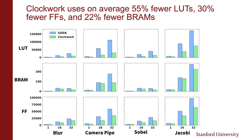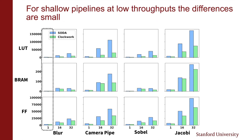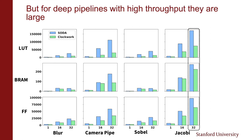This grid of charts shows resource utilization for blur, camera pipeline, and Sobel by SODA and Clockwork. Each column is one application, each row is a resource category: flip-flops at the bottom, BRAMs in the middle, and LUTs at the top. For small, shallow pipelines with low throughputs the differences are very small — SODA (blue bars) and Clockwork (green bars) are nearly identical. But for deep pipelines with high throughputs, like Jacobi at 32 pixels per clock cycle, the differences in resource consumption are quite large, especially LUT consumption.